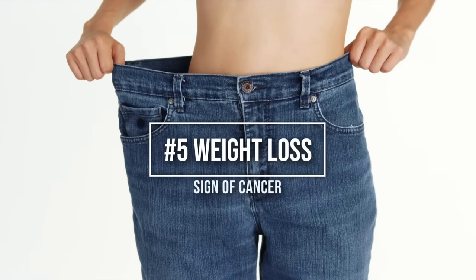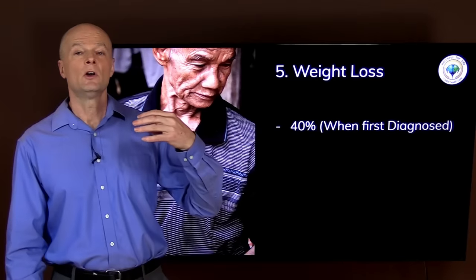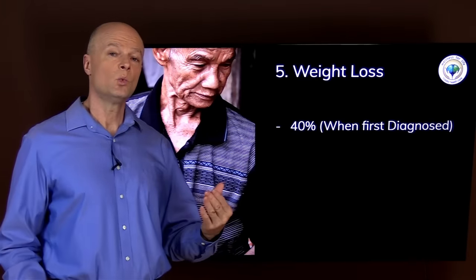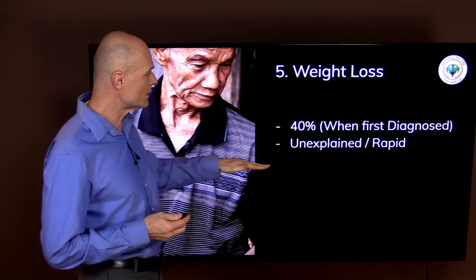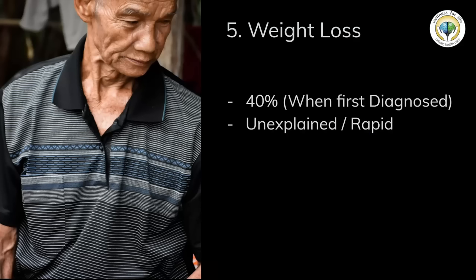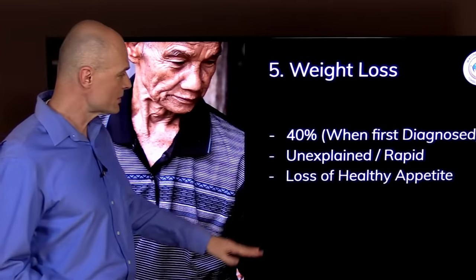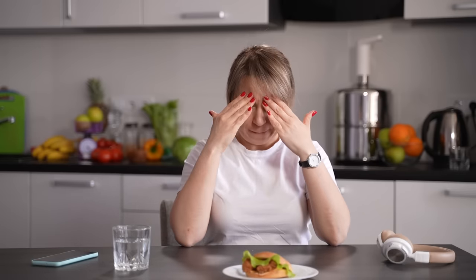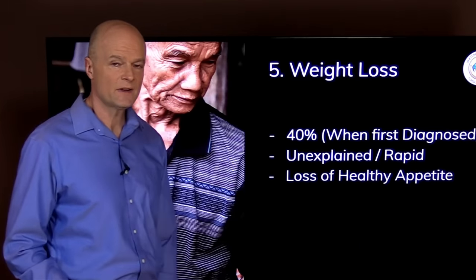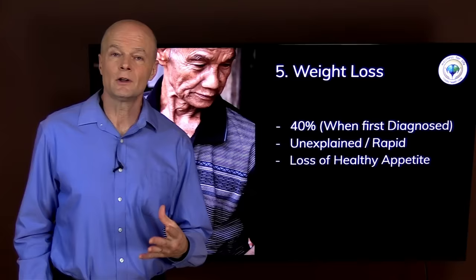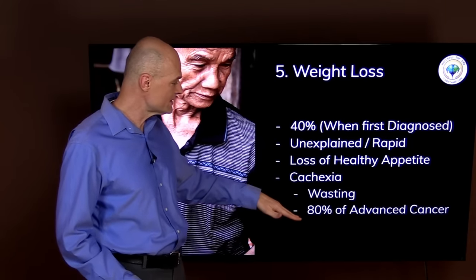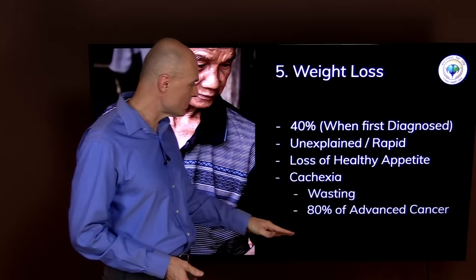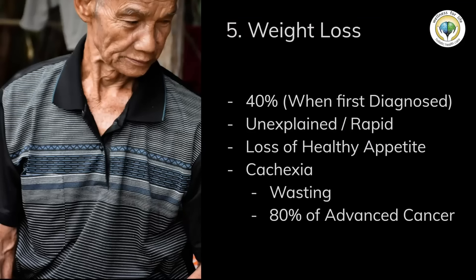Sign and symptom number five is weight loss. As many as 40 percent of people who are first diagnosed with cancer have experienced some recent weight loss. This weight loss is due to a disease process. This weight loss is usually rapid and unexplained. It's not that someone is trying to lose weight. And it's often but not always associated with a loss of healthy appetite. The body just doesn't have the balance and the resources to process food. In later stages of cancer there's also something called cachexia, which is wasting. This goes far beyond just weight loss. This happens in as many as 80 percent of late-stage cancers.